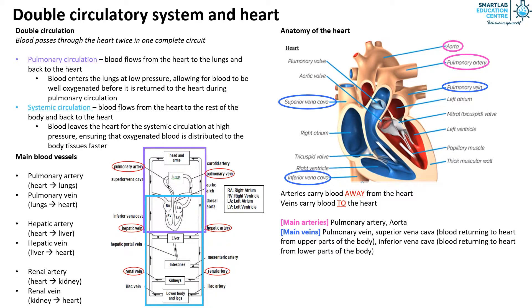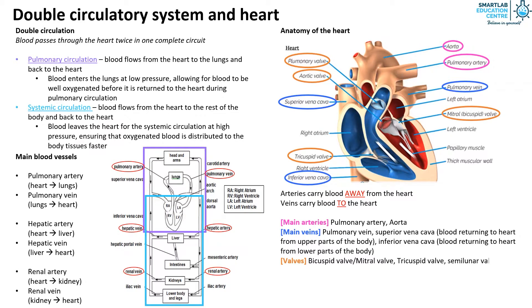The valves that can be found in the heart are the bicuspid or mitral valve, the tricuspid valve, and the semilunar valves.